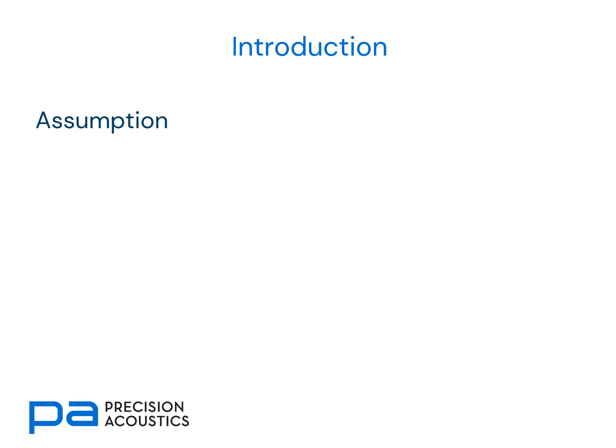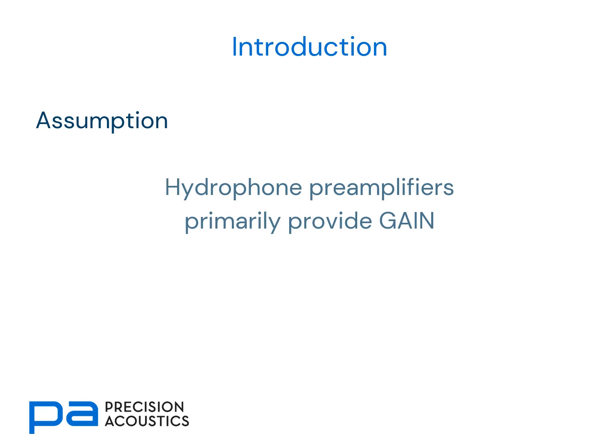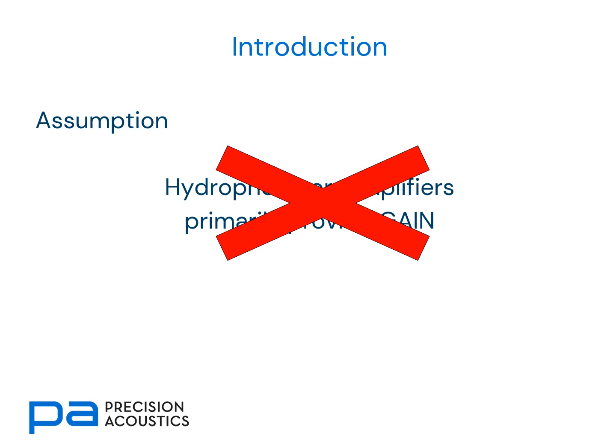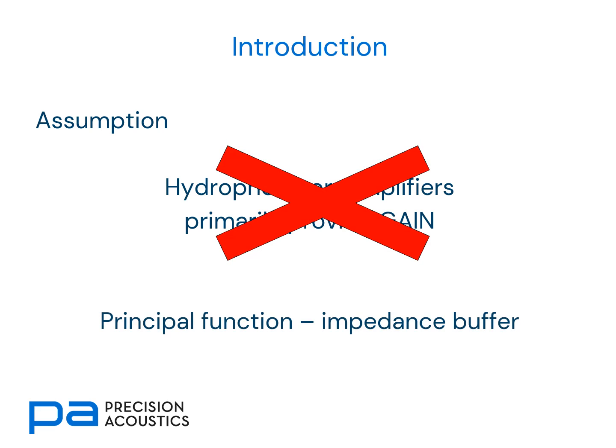It's a common assumption that the hydrophone preamplifier is primarily to provide gain. This isn't strictly true. Whilst preamplifiers will provide some level of gain, the principal function is to act as an impedance buffer. To begin to understand why, we need to consider the equivalent circuit.